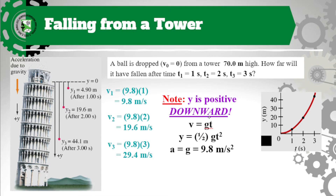Let's try an example. A ball is dropped (v₀ = 0) from a tower 70 meters high. How far will it have fallen after 1 second, 2 seconds, and 3 seconds? We use v = v₀ + gt — positive gt because it is taking down. Since v₀ = 0: v₁ = 9.8 × 1, v₂ = 9.8 × 2, v₃ = 9.8 × 3. So the values are 9.8, 19.6, and 29.4 m/s respectively.